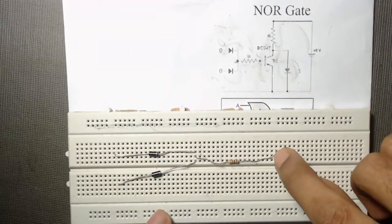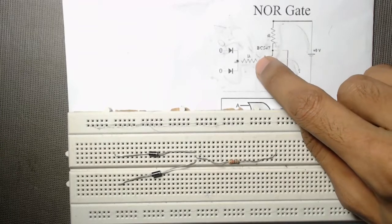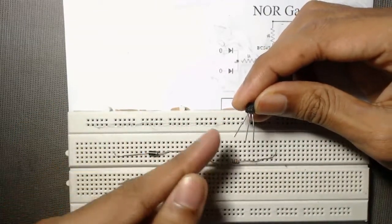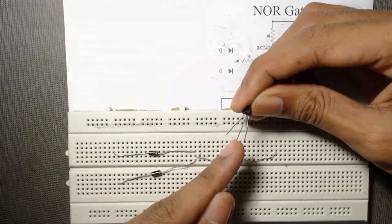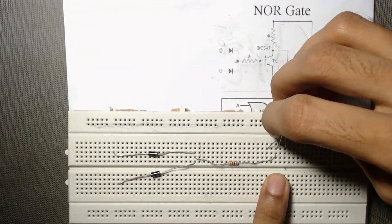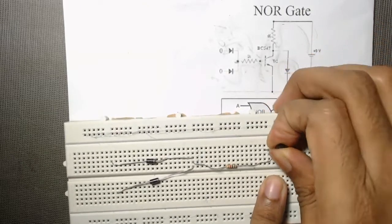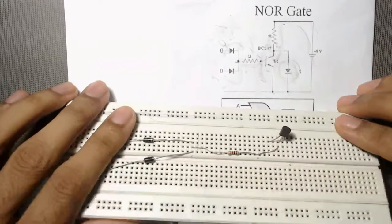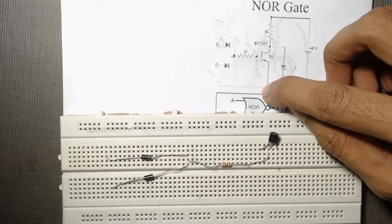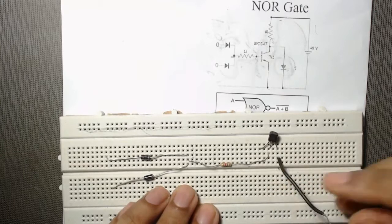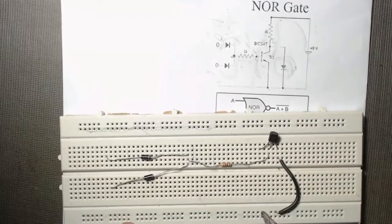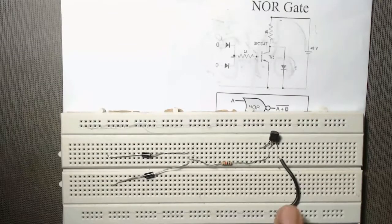From the other terminal of the resistor, the base of the transistor is connected. Here is our transistor: the leftmost terminal is collector, the middle one is base, and the rightmost is emitter. We insert it so the base is connected to the resistor, and connect a wire from the emitter to our ground row.